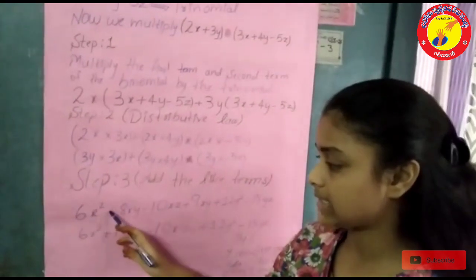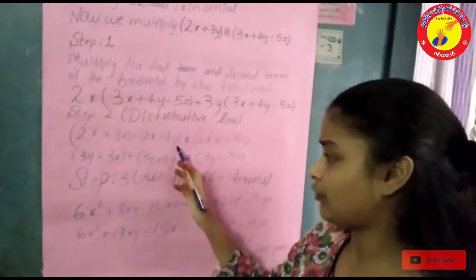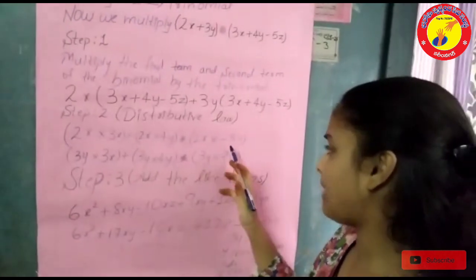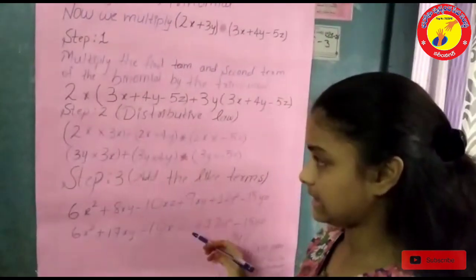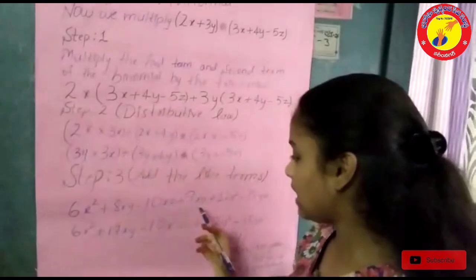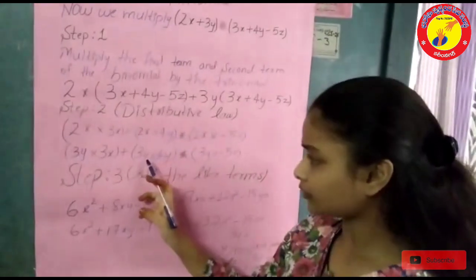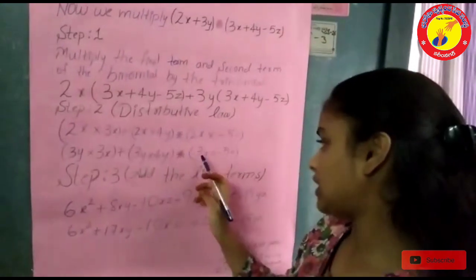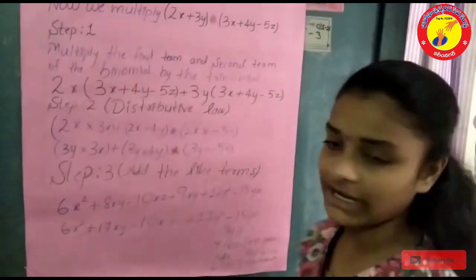2x into 3x is equal to 6x squared, plus 2x into 4y equals 8xy, minus 2x into minus 5z minus 10xz, plus 3y into 3x equals 9xy, plus 3y into 4y equals 12y squared, plus 3y into minus 5z minus 15yz.